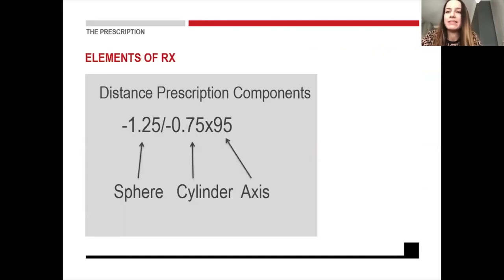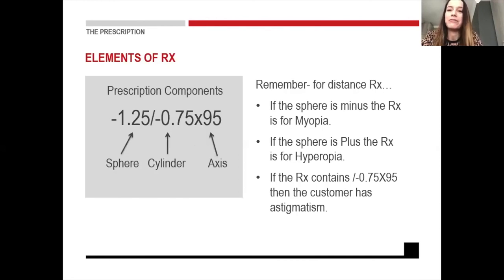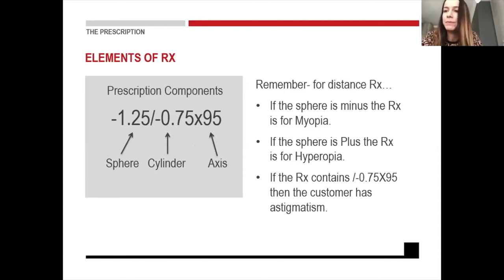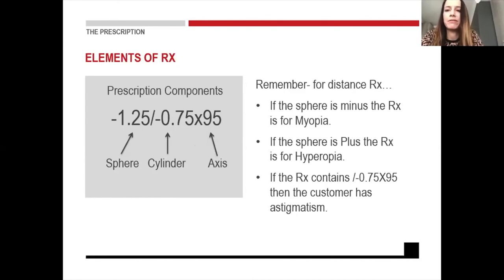The distance prescription components are usually made up of a sphere, a cylinder, and an axis — which is the degree for the cylinder. If we look at a sample prescription, a minus in front of the sphere value — for example minus 1.25 — indicates the patient is a myope. If the sphere is a plus, it will be hyperopia. The second part of the prescription — for example minus 0.75 axis 95 — is the patient's astigmatism correction, as was shown earlier.